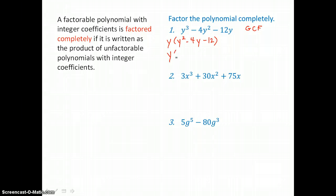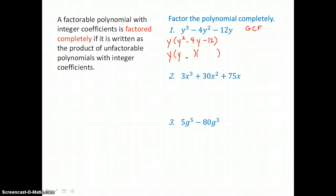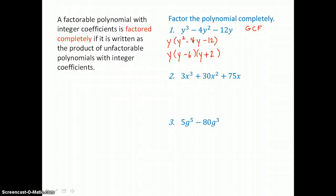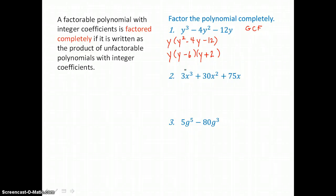That trinomial that's left should factor into a binomial times a binomial. Factors of y squared go first — y times y is y squared. Factors of 12 that have a difference of 4 are 6 and 2. We'll make the 6 negative and the 2 positive so that negative 6y and positive 2y give negative 4y in the middle, and negative 6 times positive 2 is negative 12. So that trinomial is completely factored.